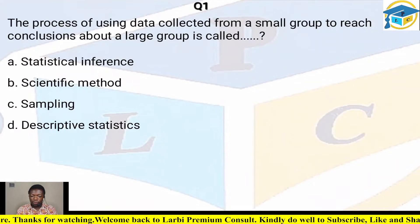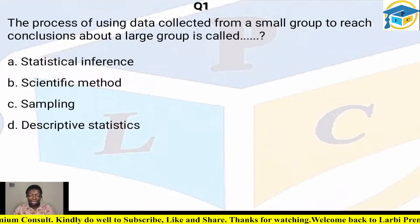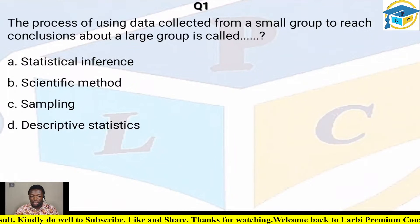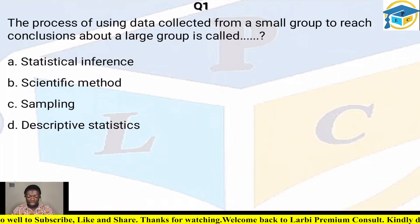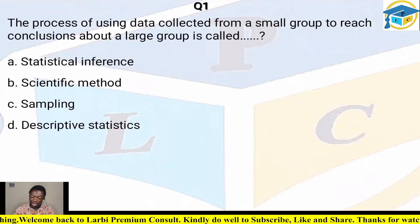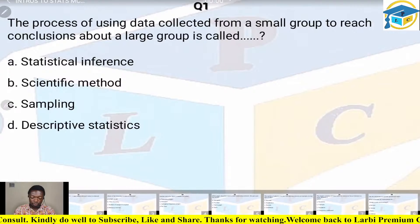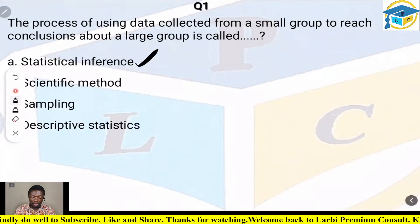Question one: the process of using data collected from a small group to reach a conclusion about a large group is called — what is the correct answer? The options are: A) statistical inference, B) scientific matters, C) sampling, D) discrete statistics. The correct answer is A — statistical inference.